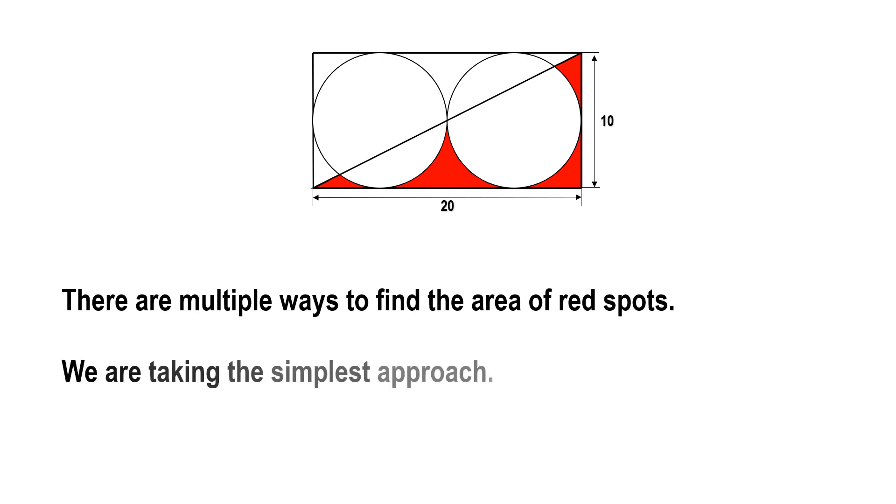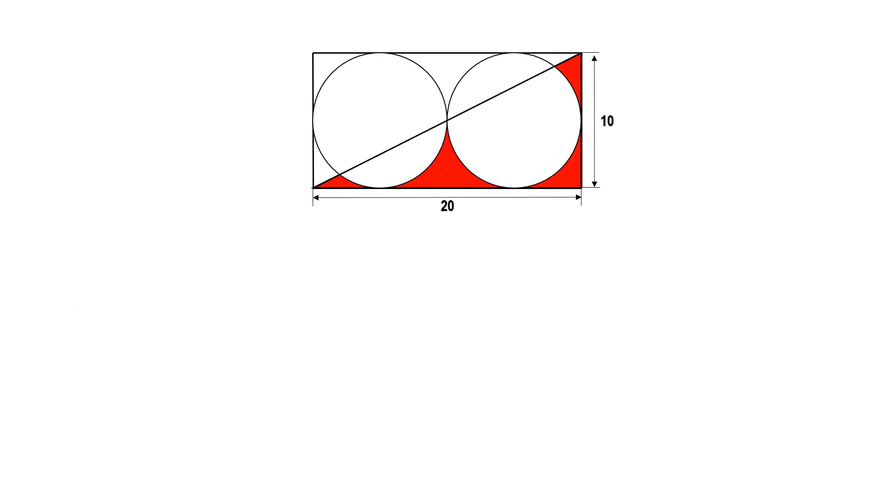Let's see from the diagram what we can see. There is one rectangle and there are two circles inside the rectangle. The circles are of equal size.